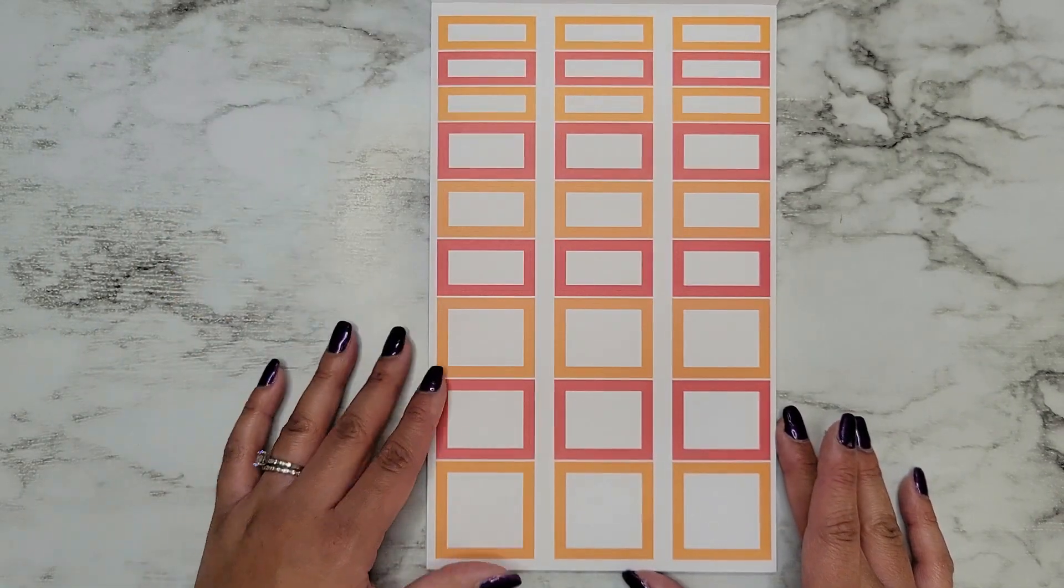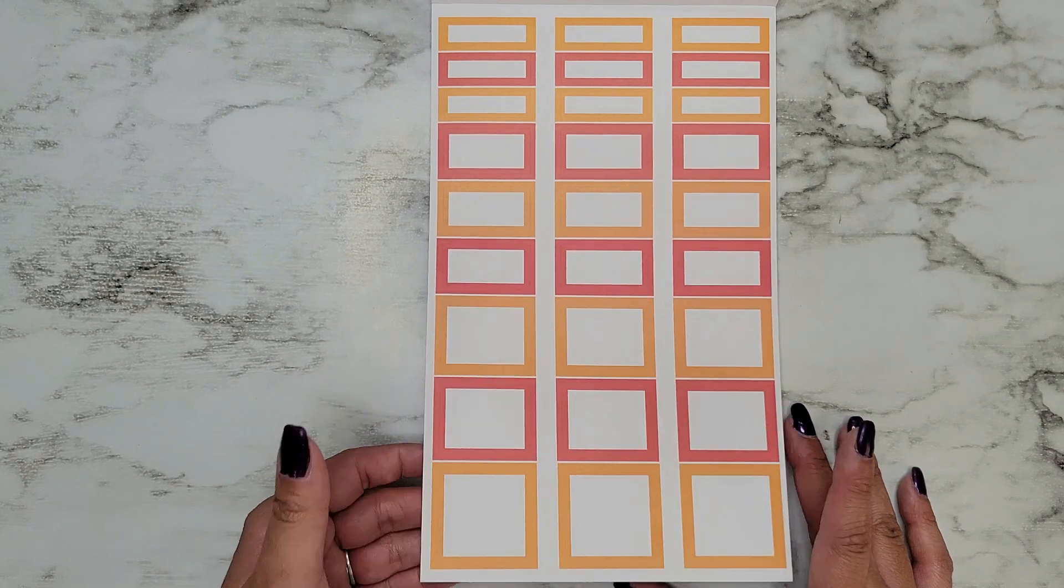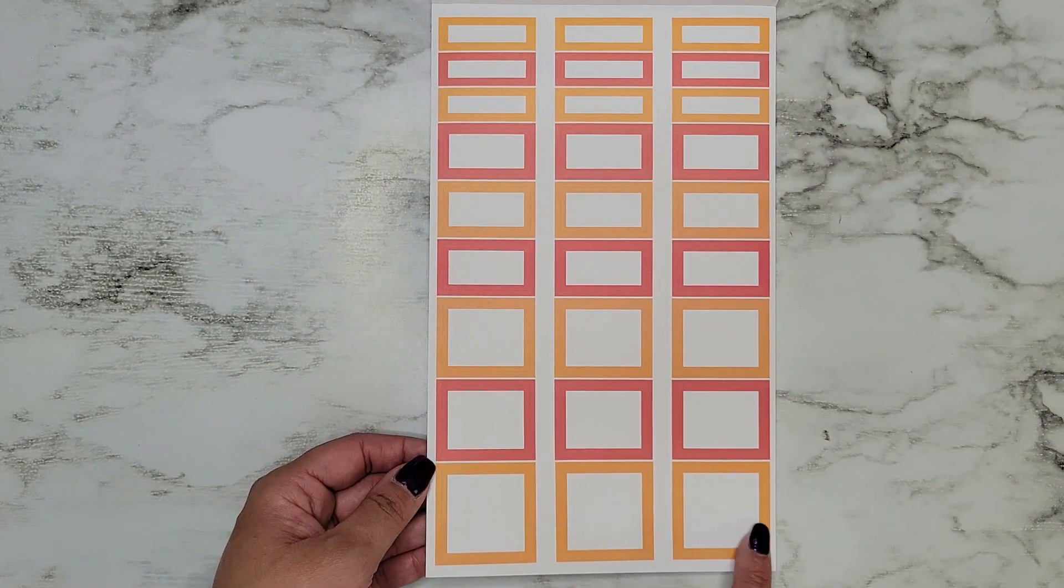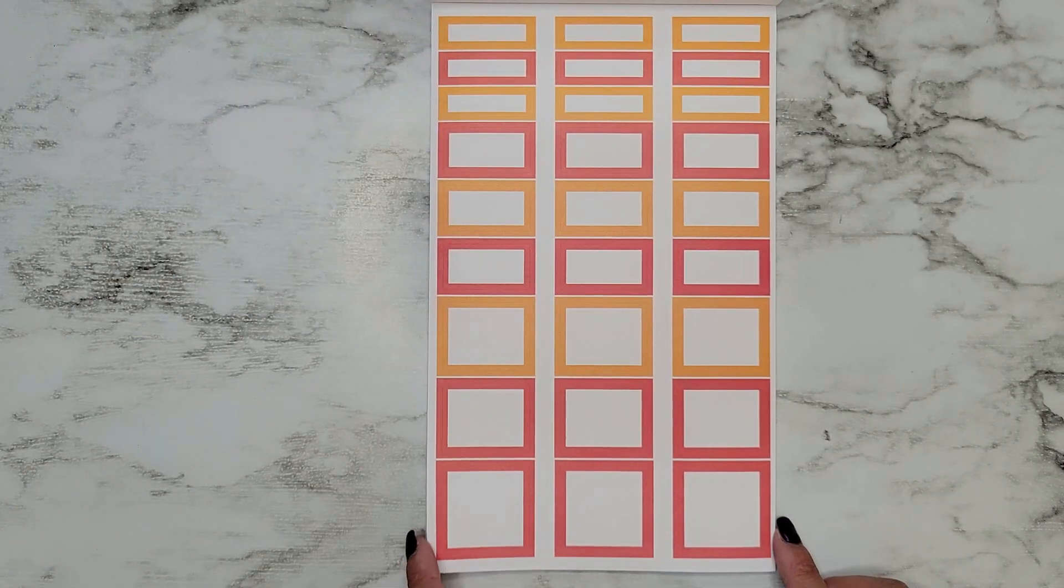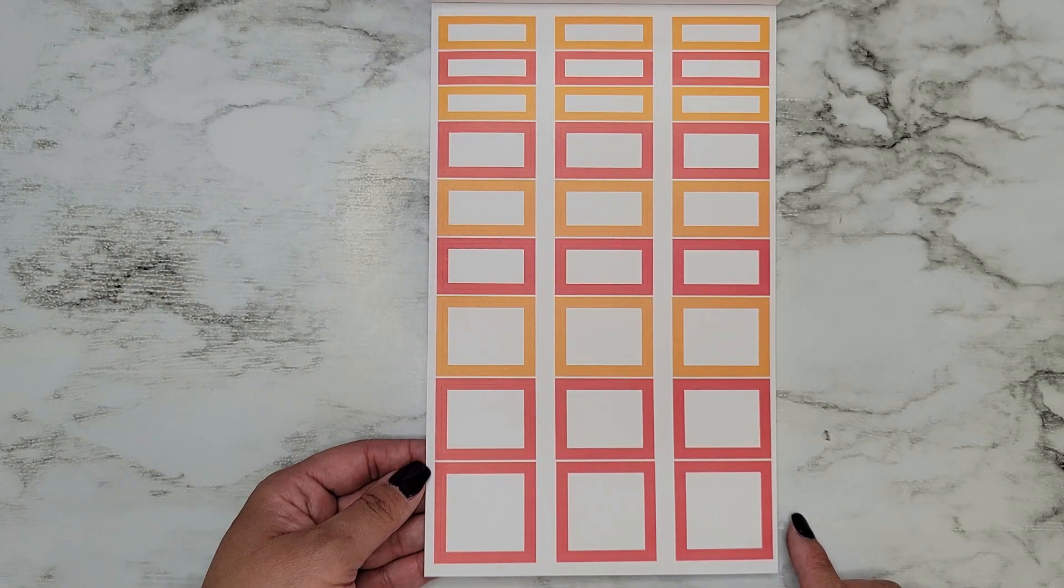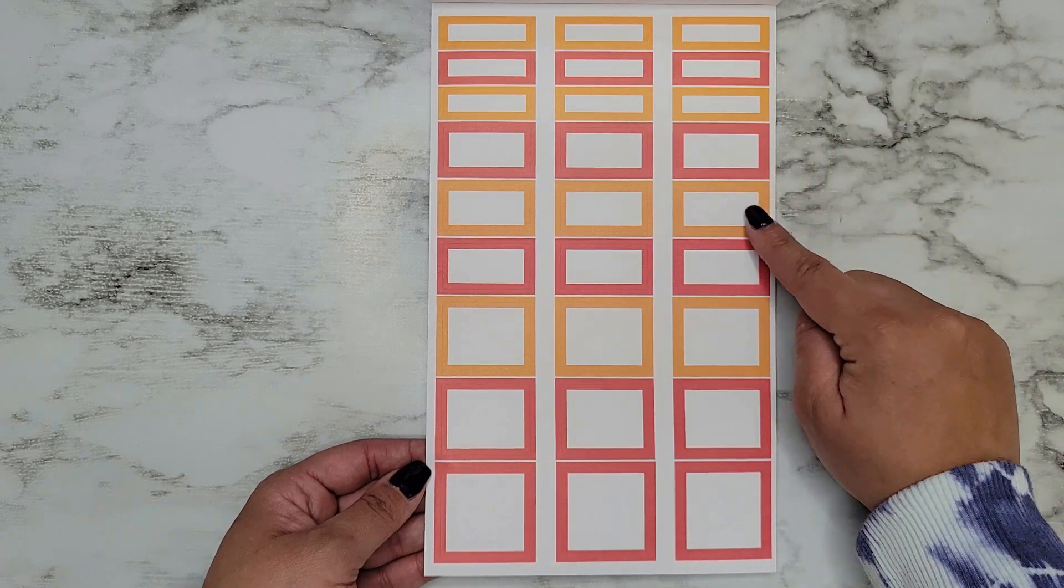Here's page two and you can see those did swap there. Okay, then we have our page of smaller boxes. You can see we get a second page with those in red this time.